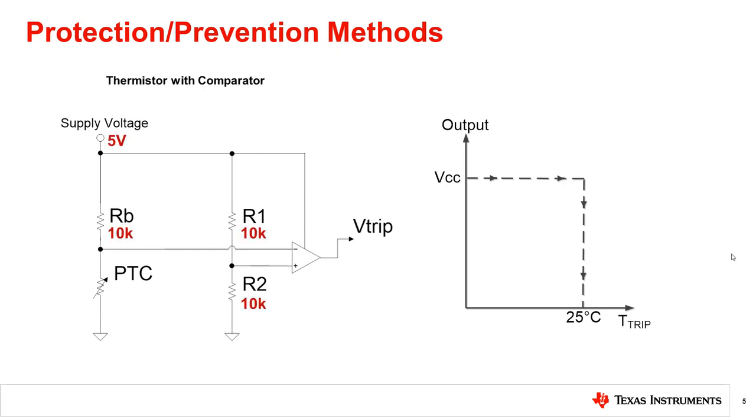For example, with a five volt supply voltage, if you use a 10k ohm resistor for R1, R2, and RB, you will get a 2.5 volt threshold on the positive input of the comparator. As the resistance of the thermistor increases, the input voltage into the negative input of the comparator does as well.